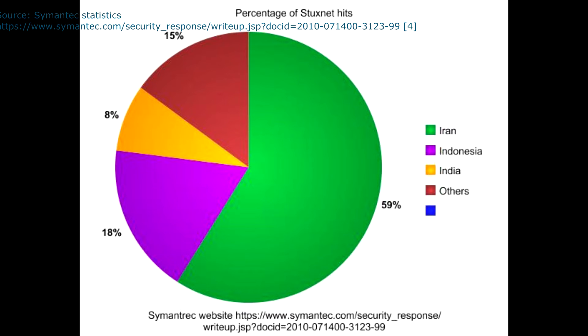As we can see in the graph, Iran was the country that was affected the most, where it caused problems at a nuclear facility.